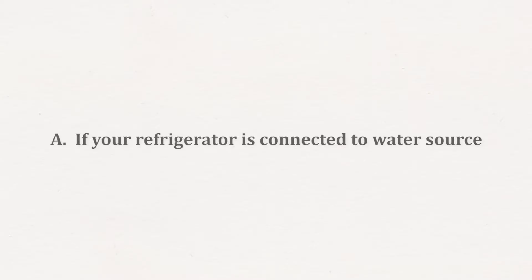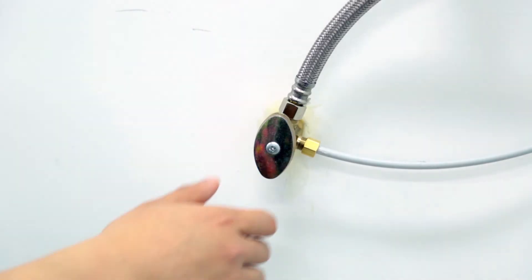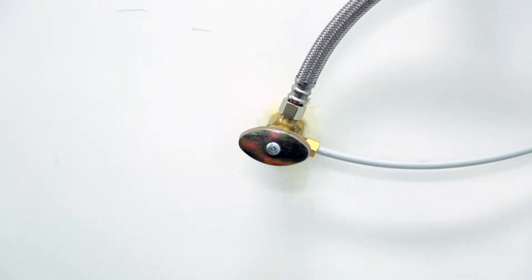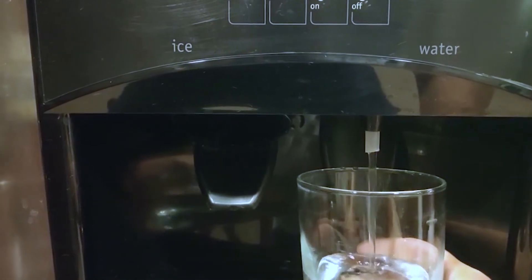If your refrigerator is connected to water source, shut off the cold water valve connected to refrigerator and water filter. Turn on the refrigerator dispenser to release the pressure.